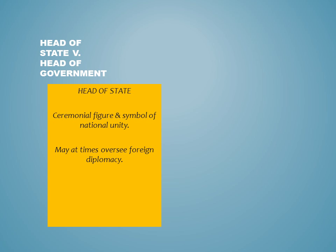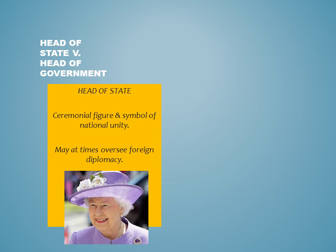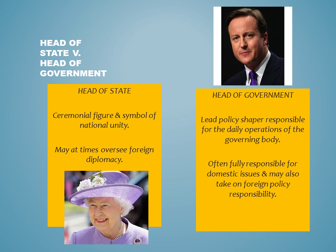All comparative government students should know the difference between the terms head of state and head of government. The UK is a prime example of a country that has opposing heads of state versus heads of government. The head of state is usually the ceremonial figure or the person who brings about national unity. They may at times have some foreign policy responsibilities, but are not necessarily going to be involved in day-to-day governance. For example, Her Majesty the Queen is considered the head of state in the UK, and most of her roles are ceremonious, not directly linked to governing. The head of government in the UK is the Prime Minister, who is shaping policy directly on a daily basis and is often responsible for domestic issues, though they may also have some foreign policy responsibility.